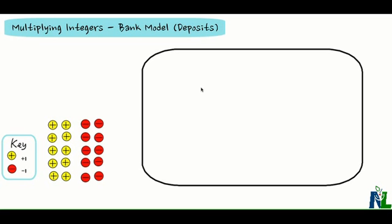I'm going to use a bank model to multiply integers. You'll see that these models are a great way to understand why the rules for multiplying integers work the way they do.